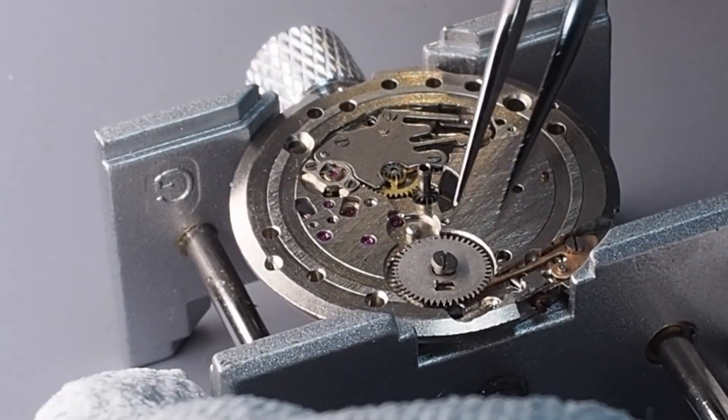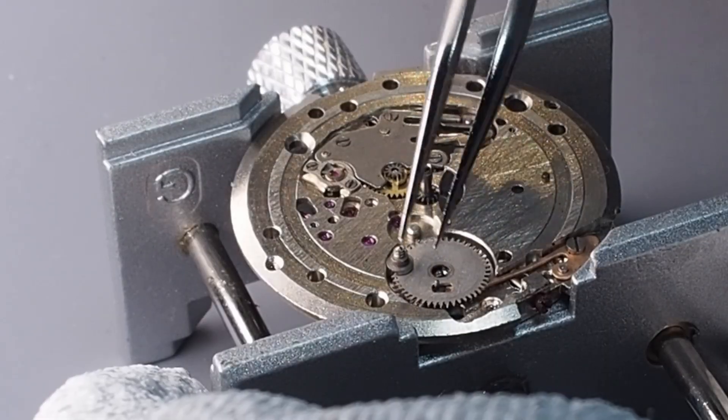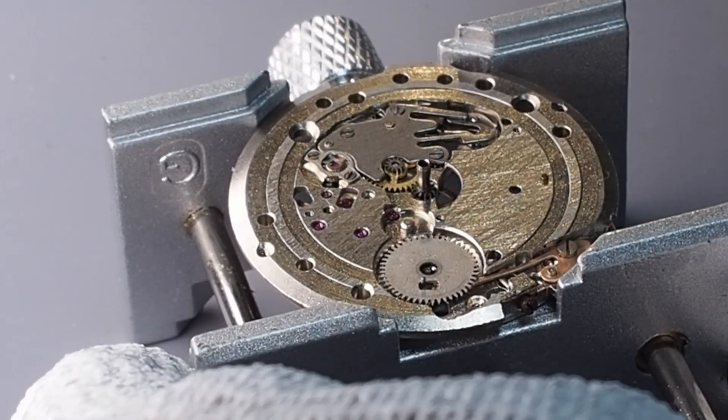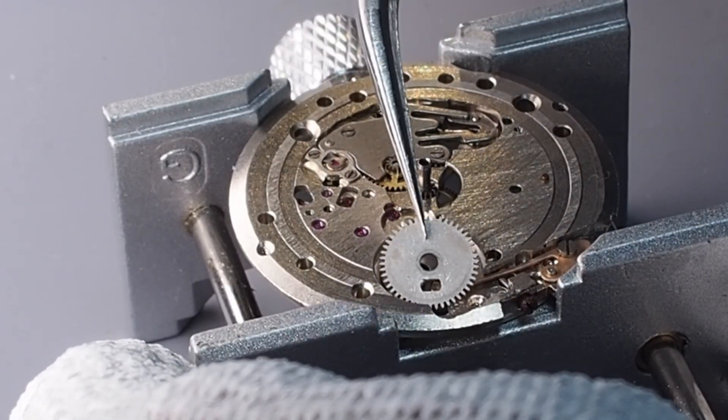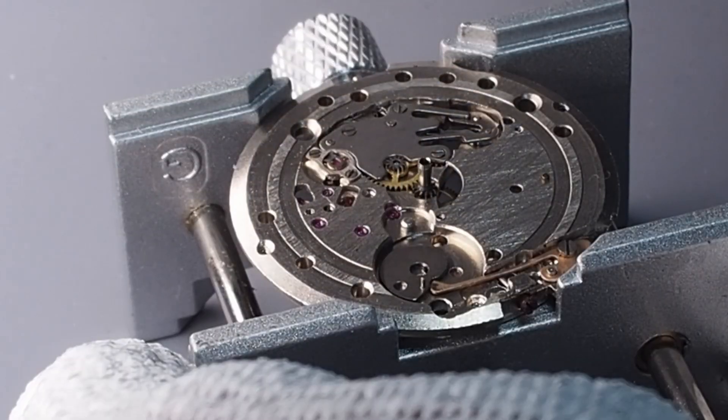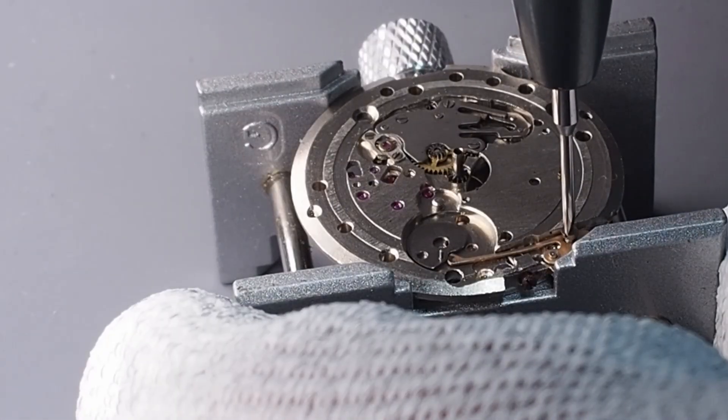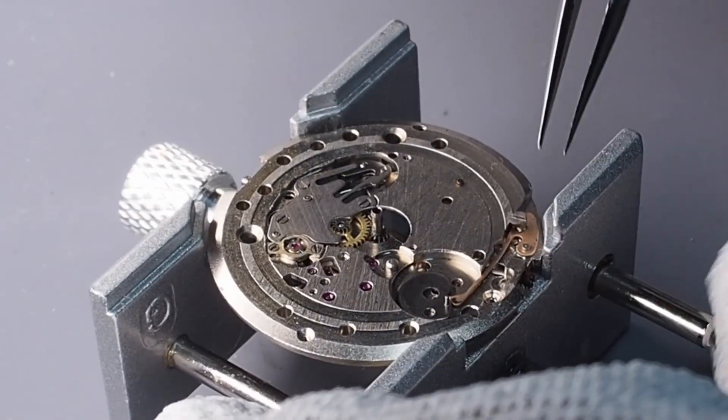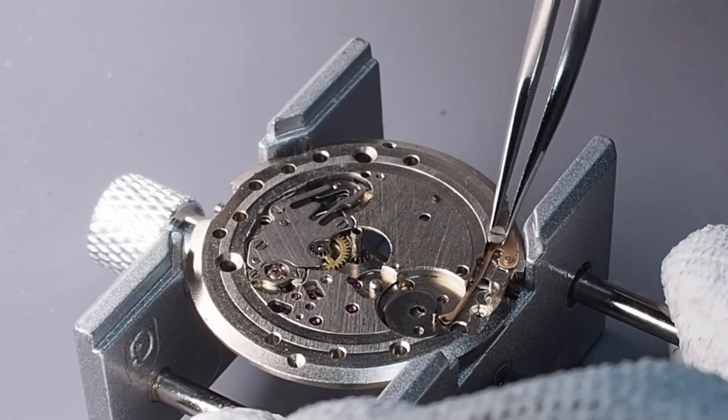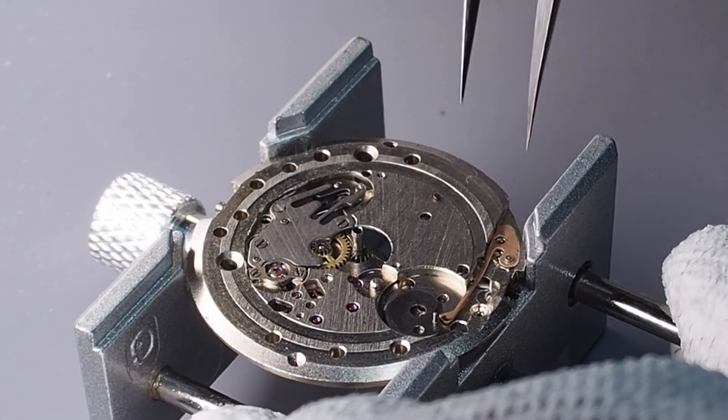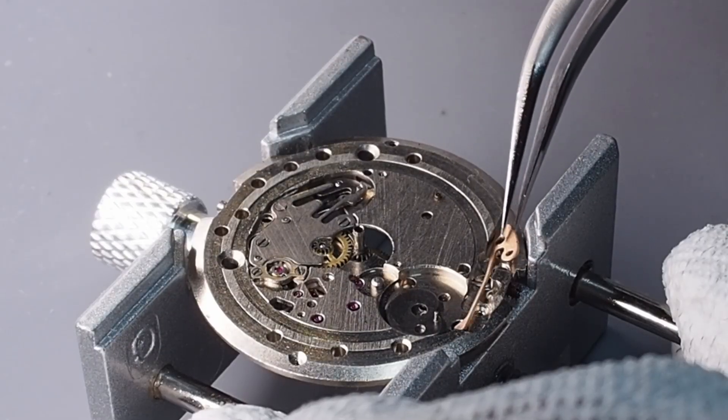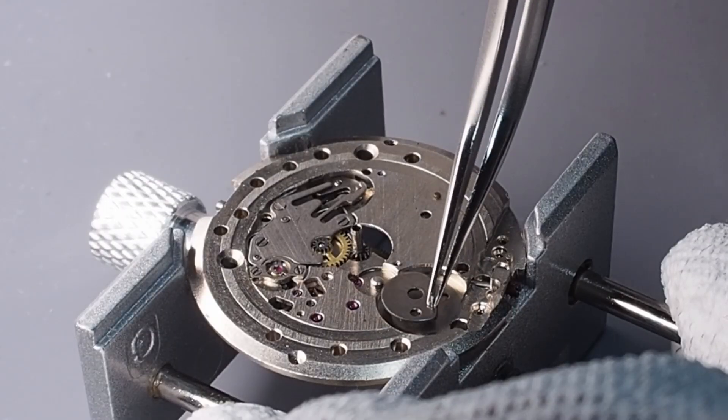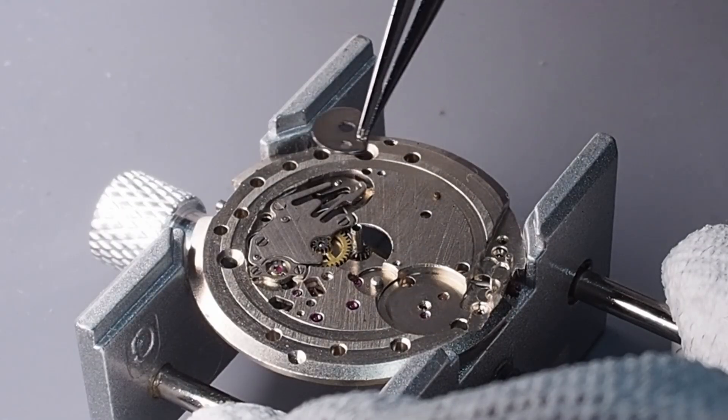The date mechanism in Vostok 2416B is very straightforward. A driving wheel mounted on the hour wheel has a small finger that pushes the date wheel forward one step every 24 hours. The change happens gradually and completes around midnight. To keep the date aligned in the window, a spring-loaded part called the date jumper presses against the teeth of the date wheel. This locks the wheel in position until the next change. It's not an instant change like in some Swiss watches. The Vostok switches more slowly, but the design is simple, durable and easy to service.